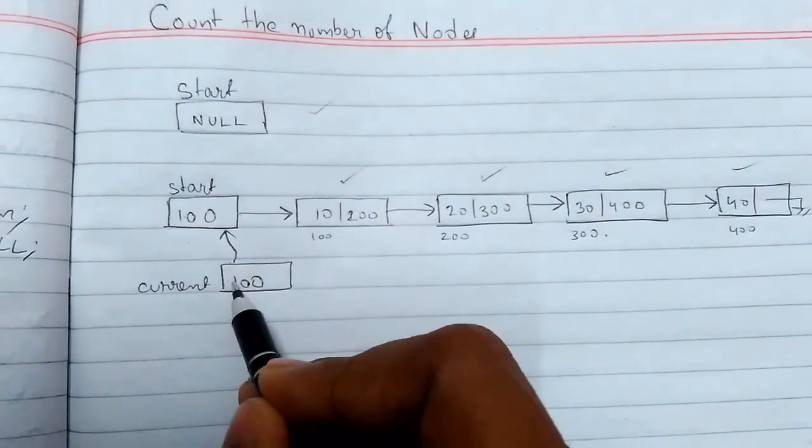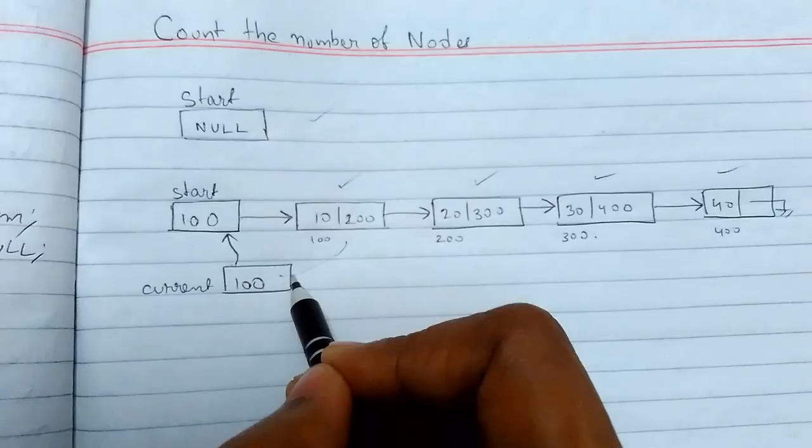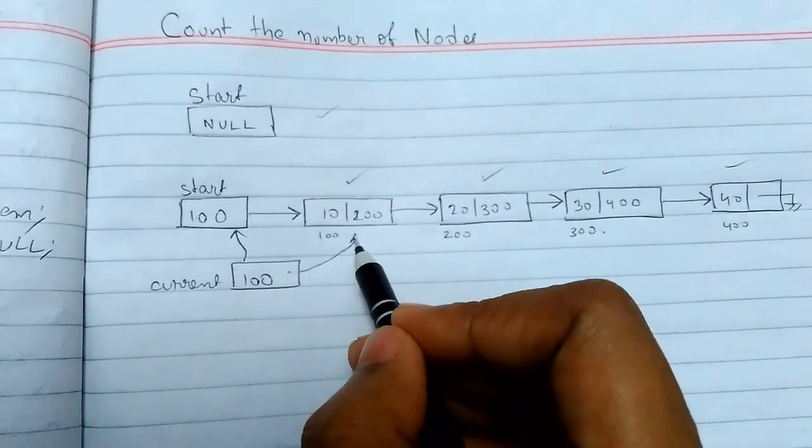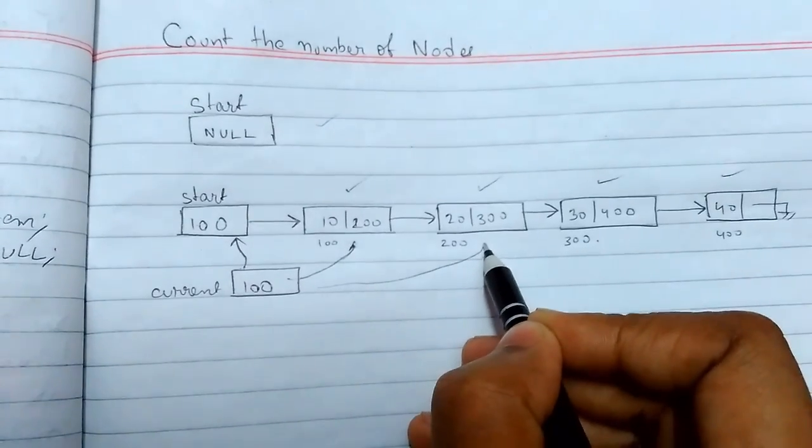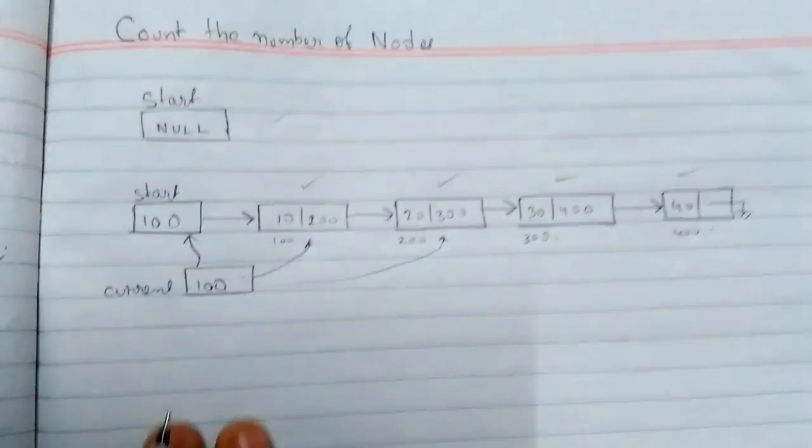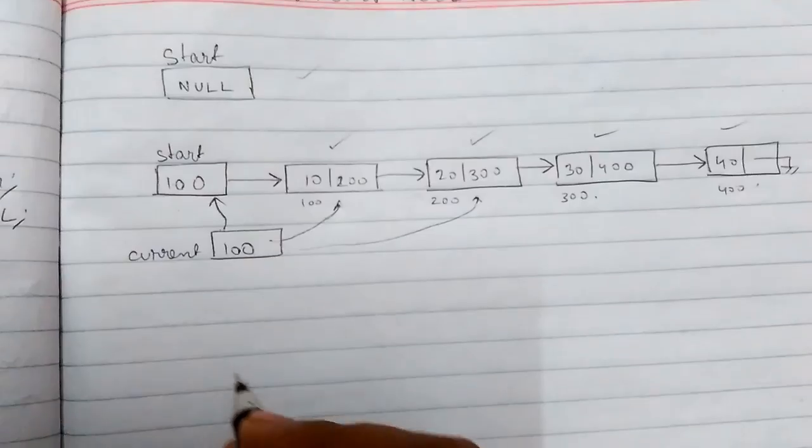First, current will point to the start. After that, it will keep on updating itself, moving to the next node, and then it will eventually reach the end. This way we'll get the number of nodes present.